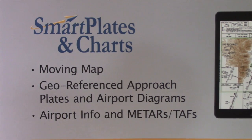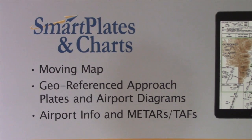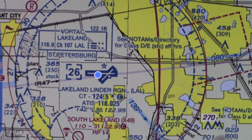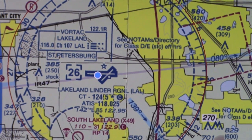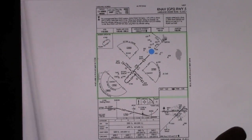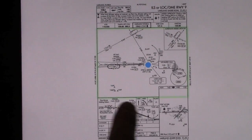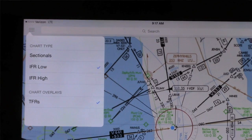Here at Sun and Fun, Seattle Avionics is introducing our new Smart Plates and Charts application. It's a very simple program — no flight planning, no in-depth weather or EDS support or things like that — but just your aircraft over the top of your geo-referenced plates and charts of all types.